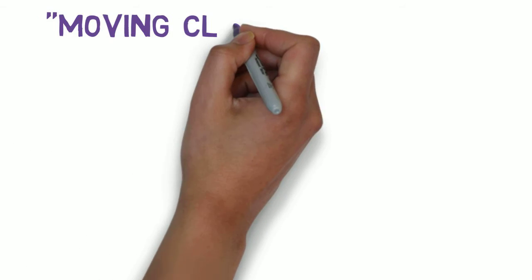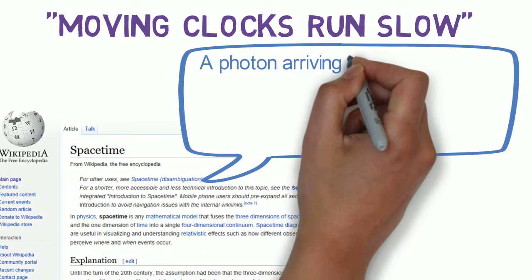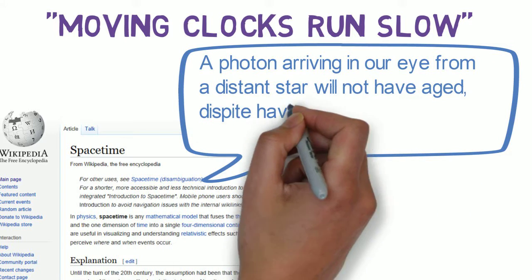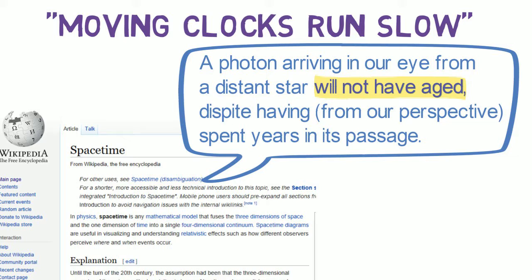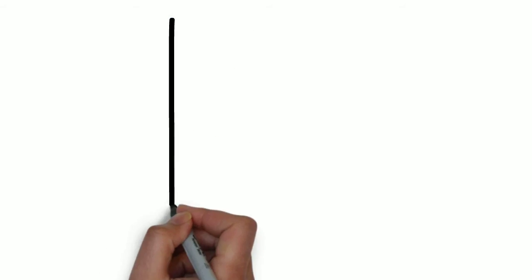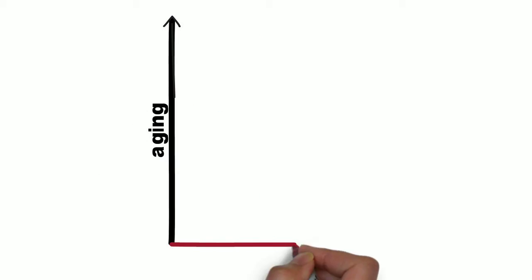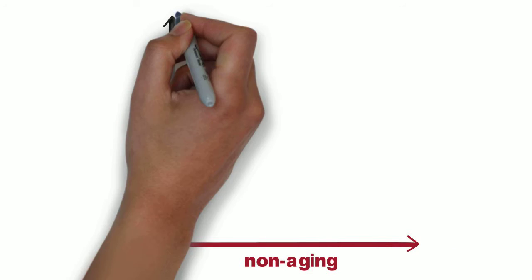Consider this limiting case of moving clocks run slow. A photon arriving in our eye from a distant star will not have aged despite having, from our perspective, spent years in its passage. That we age while light does not implies independent aging and non-aging paths to the future.